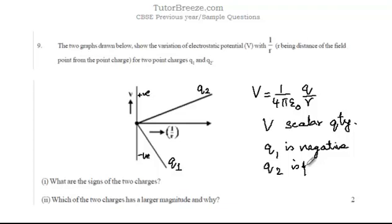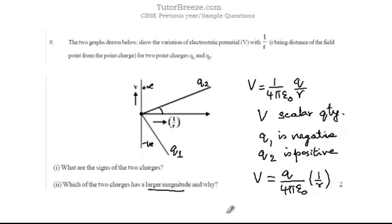Next you have to find which of the two charges has a larger magnitude and why. To find the magnitude of the two charges we will compare the two slopes. You can see that V is plotted versus 1 over r. So the slope of this curve would be V equals q by 4 pi epsilon 0 times 1 over r. This means that the slope is given by q over 4 pi epsilon 0.